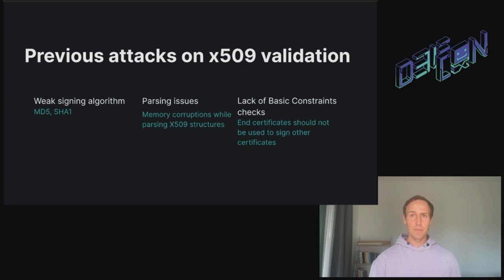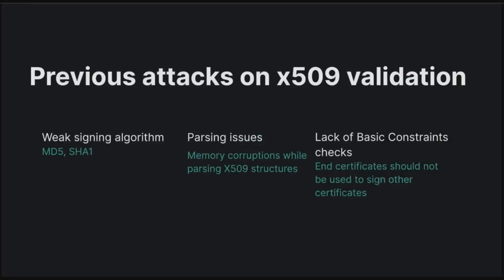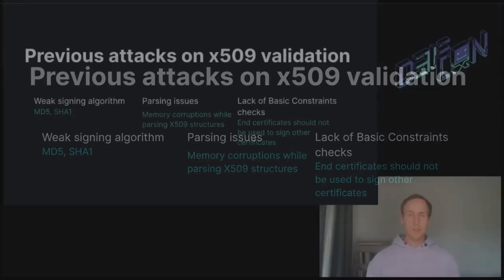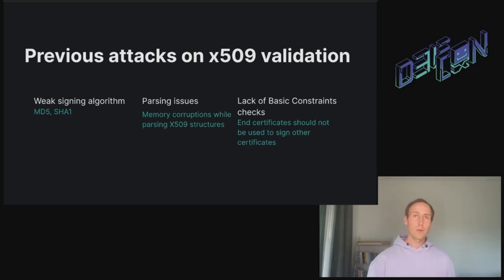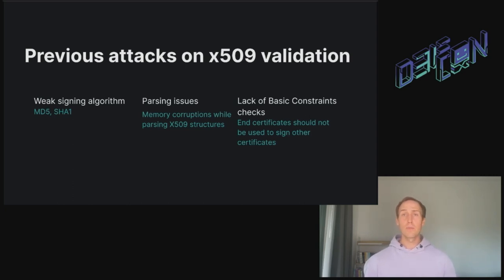Before we dive into the attack section, I'm going to briefly mention some of the previous well-known attacks on certificate validation. Obviously, the security of the authentication system depends on the strength of the signature. If you can somehow forge the content of the certificate but keep the same signature, you can completely break the authentication process. Also, since the X.509 format is quite complex, just parsing these data structures can lead to buffer and heap overflows. In addition, lack of basic constraint checking can also be used to bypass the authentication process. In my research, I mostly looked at how MTLS is implemented in applications written in Java. In the Java Development Kit, most of these attacks are already mitigated at the language level, so I had to take a different approach. At the same time, the attacks I'm going to describe are also applicable to other languages.